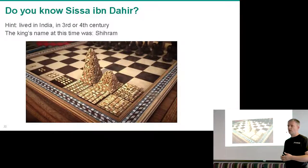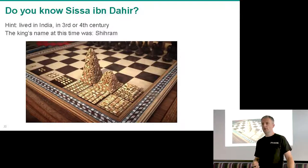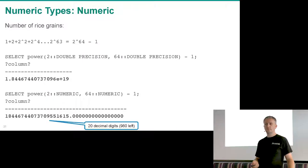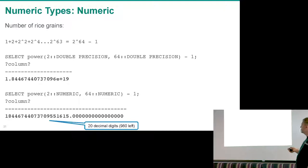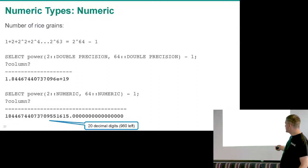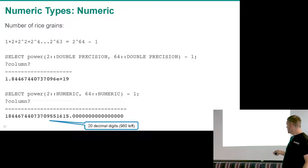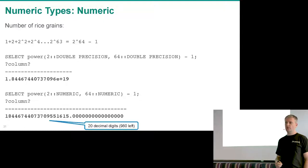We start with one grain of wheat and double the number on each field of a chessboard. If you use double precision the result is not very exact. But if you use numeric — 2 to the power of 64 minus 1 — you get a very exact number, and we only use about 20 digits, leaving 980 of our 1000 available digits unused. If you ever find a use case that exceeds numeric, please let me know.